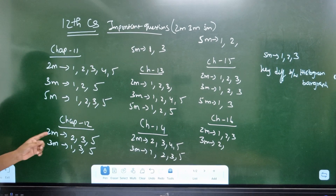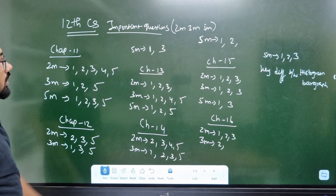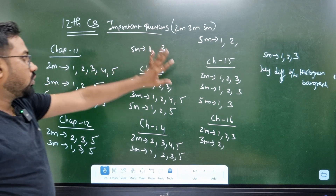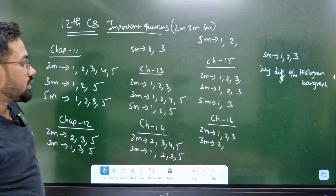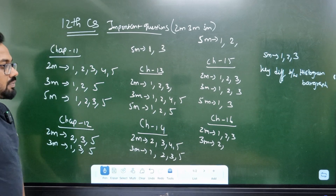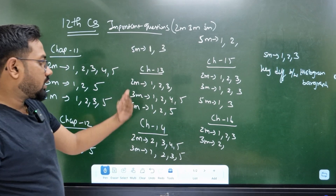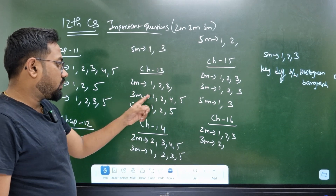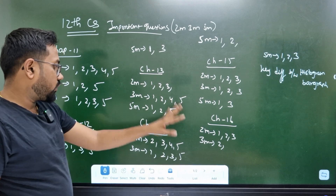Chapter 12 — we must study 2 mark and 3 mark because we are new, and 5 mark is more and more. From chapter 13, we must learn 2 mark. For 2 mark it is very easy. Chapter 13, 2 mark and 5 mark is easy.